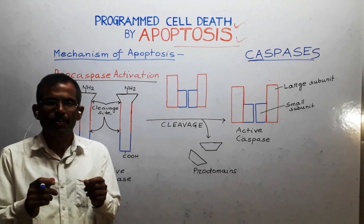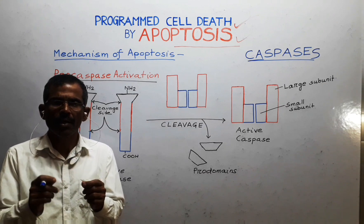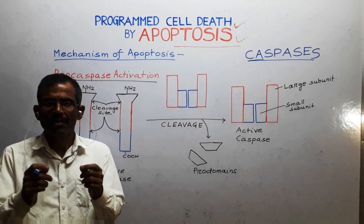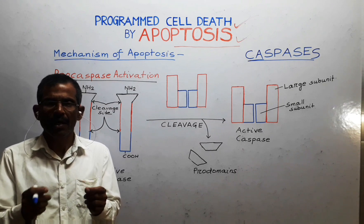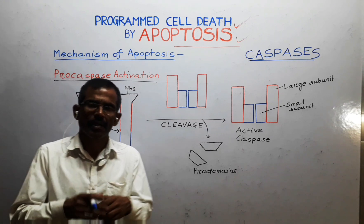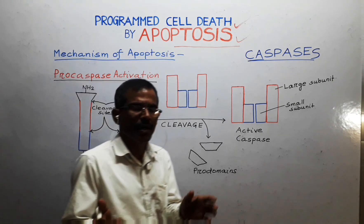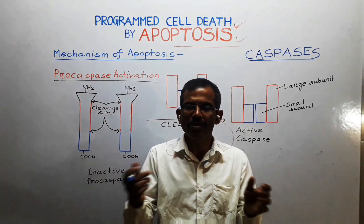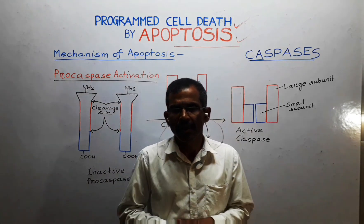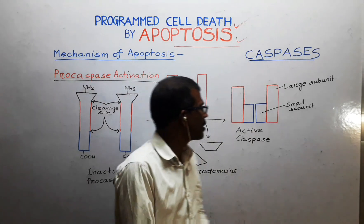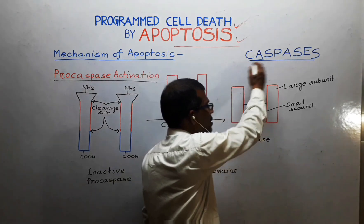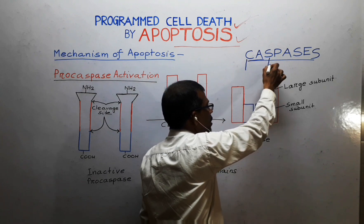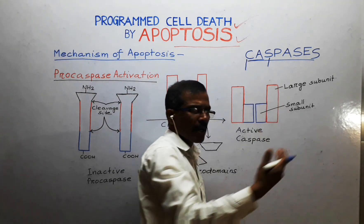Caspases are a family of proteases that have a cysteine residue at their active site. They cleave the target protein at specific aspartic acid residues. Because of this, they have been named caspases — C for cysteine and ASP for aspartic acid.